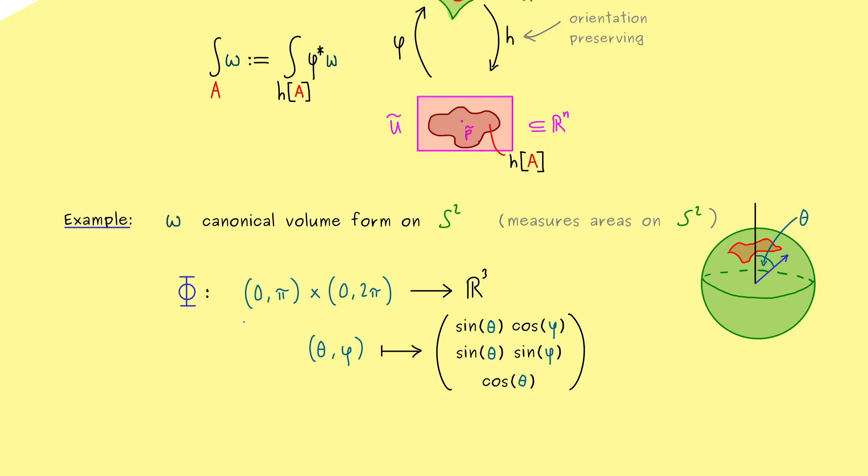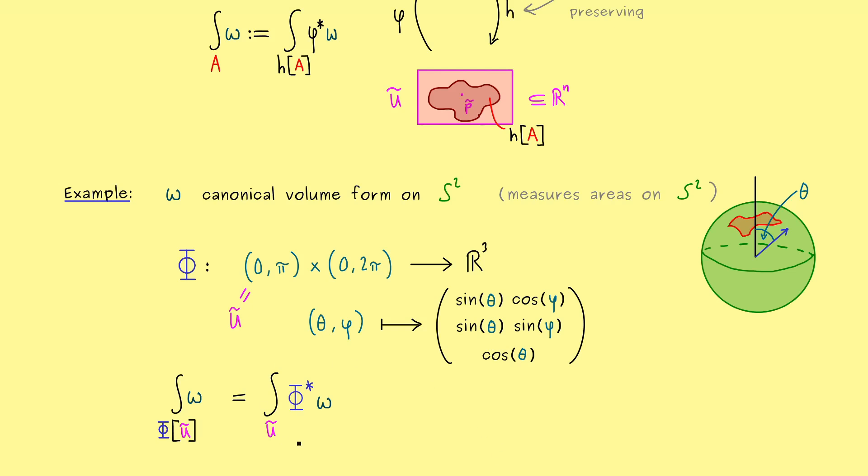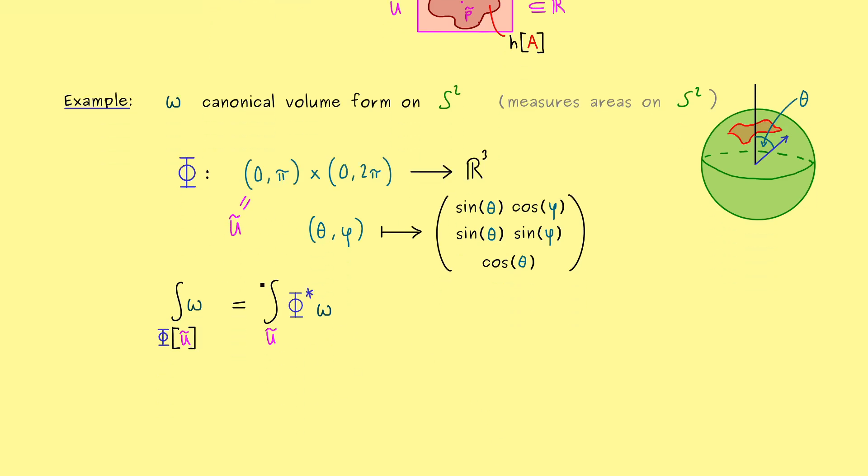Our open domain ũ is here on the left hand side. Now we want to integrate on S^2, which means we need the image of ũ under phi. This is the same as before, just instead of the chart, we use the parameterization. Hence on the right hand side now, we just integrate over ũ. Then we only need to know what phi star omega is, and this is not so complicated at all.